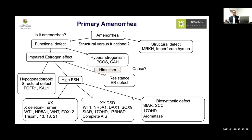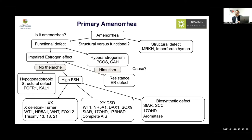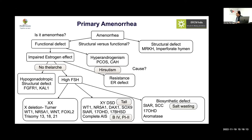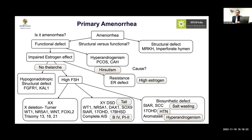Key examination findings: hirsutism with normal breast and pubic hair development suggests PCOS — we have seen many PCOS cases presenting with primary amenorrhea. No hirsutism and no thelarche means complete hypogonadotropic hypogonadism. If tall, think XY DSD or estrogen receptor defect. Normal breast with sparse pubic hair is androgen insensitivity syndrome. Salt wasting points to StAR; hypertension to 17-hydroxylase; hyperandrogenism plus tall stature to aromatase.